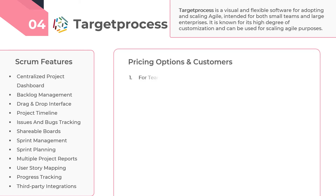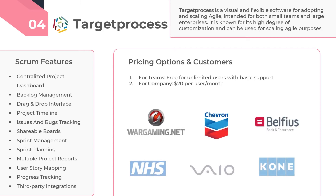Target Process is free for teams with an unlimited number of users and offers basic features, but the number of entities is limited to 1,000. Due to its versatility, the customers of Target Process range from large enterprises to mid-size enterprises and smaller companies. Some of its popular customers include Chevron, Wargamin.net, Belfius, Epay, CallRail, SprintMetal, and others.